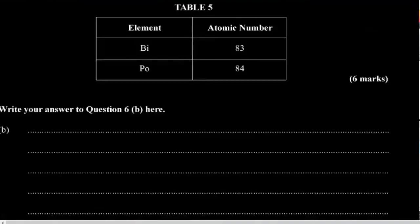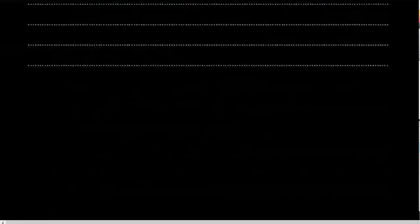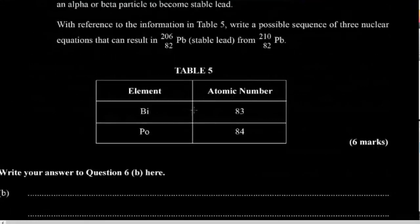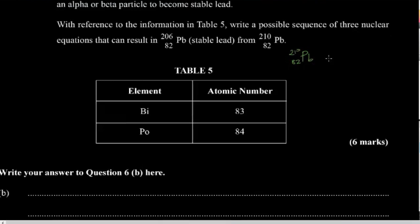We're going to use this table here to assist us. What we have essentially is unstable lead — 82, 210 — and we want it to form stable lead. This unstable lead is what we're starting with.